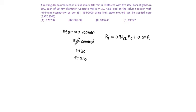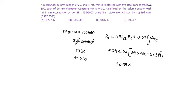Substituting values: 0.4 × 30 × (250 × 400 − 5 × 314) + 0.67 × 500 × (5 × 314), which equals 1707.11 kN.